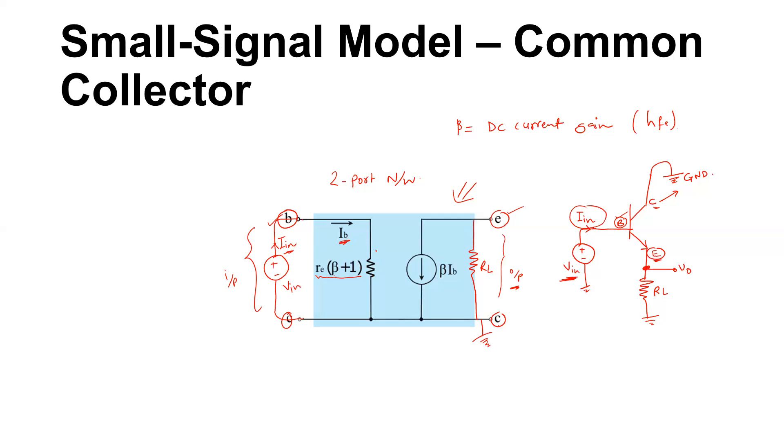Now there is a drop across this resistance which is having the value of re multiplied by beta plus one in parenthesis, and the voltage here is Vbe. Vbe is nothing but your Vin which is directly applied. Now to the output side we have this emitter current, actually this is an emitter current that flows from emitter to the collector of the transistor.